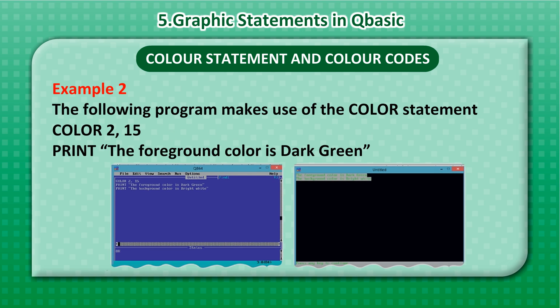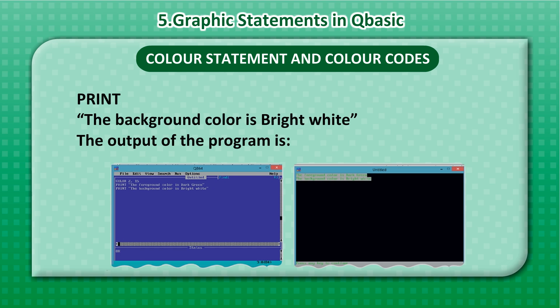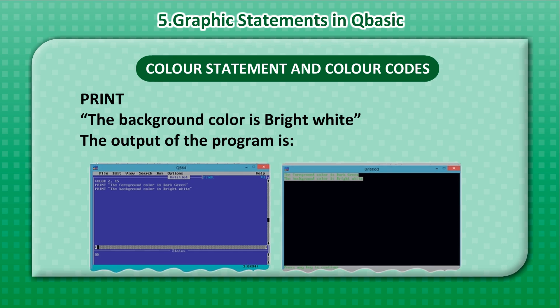Example 2: The following program makes use of the Color Statement. COLOR 2, 15 — PRINT "The foreground color is dark green." PRINT "The background color is bright white." The output of the program is shown.